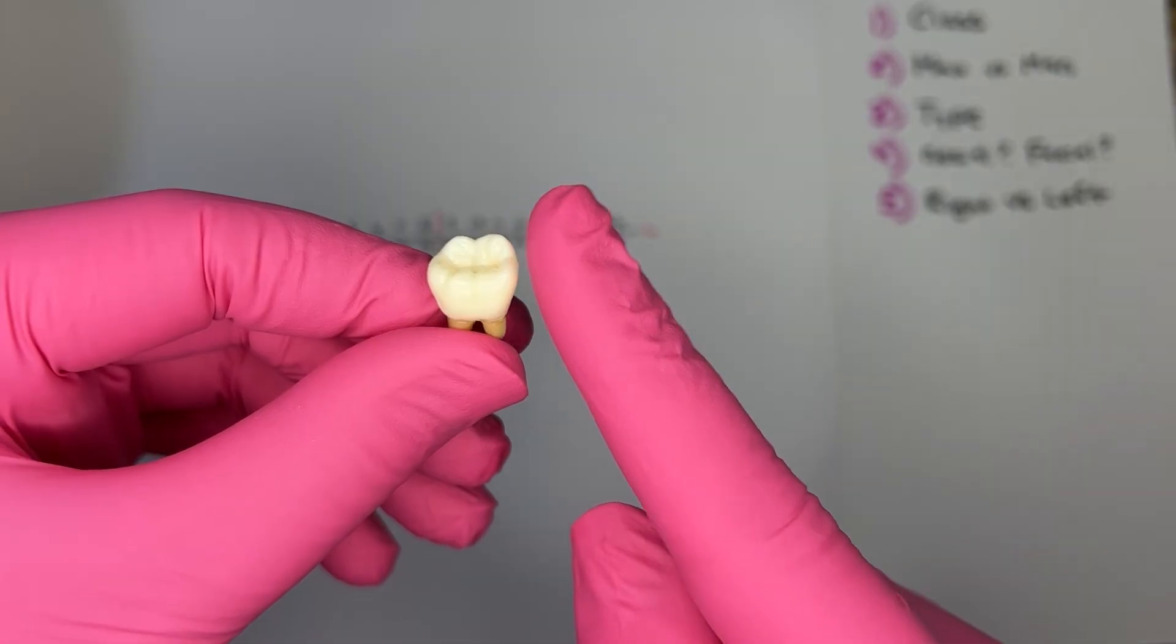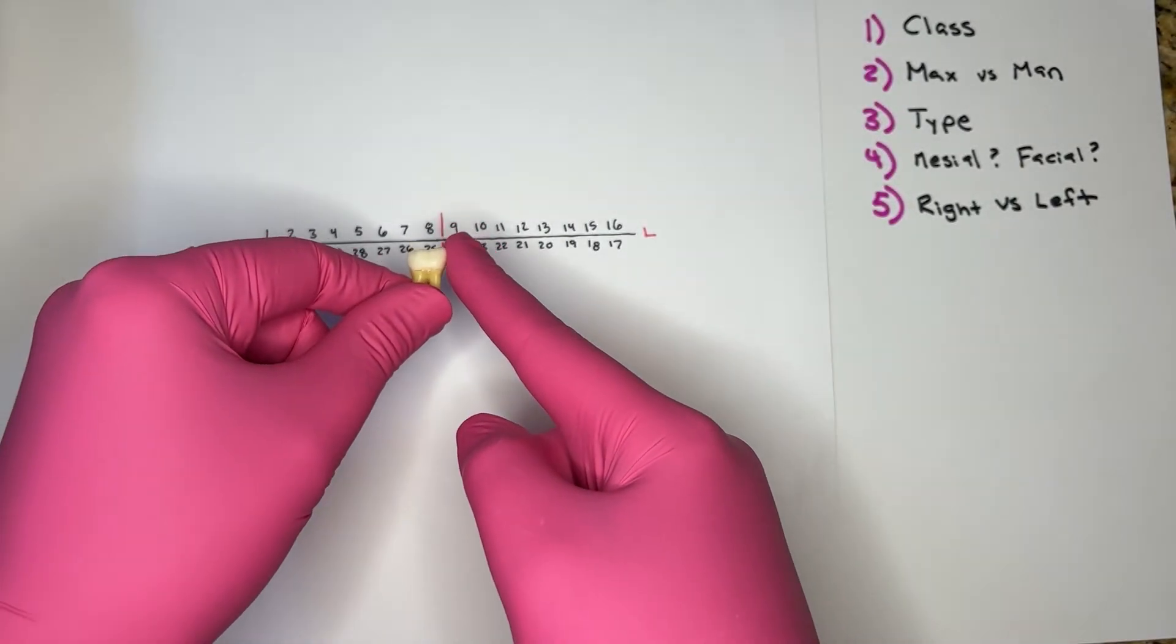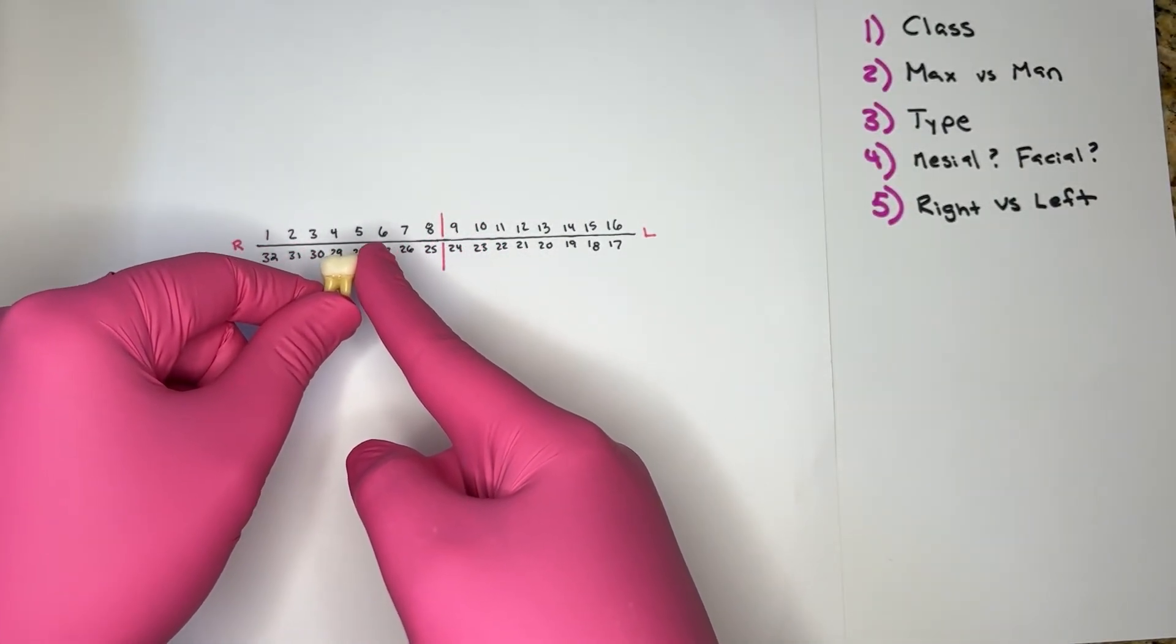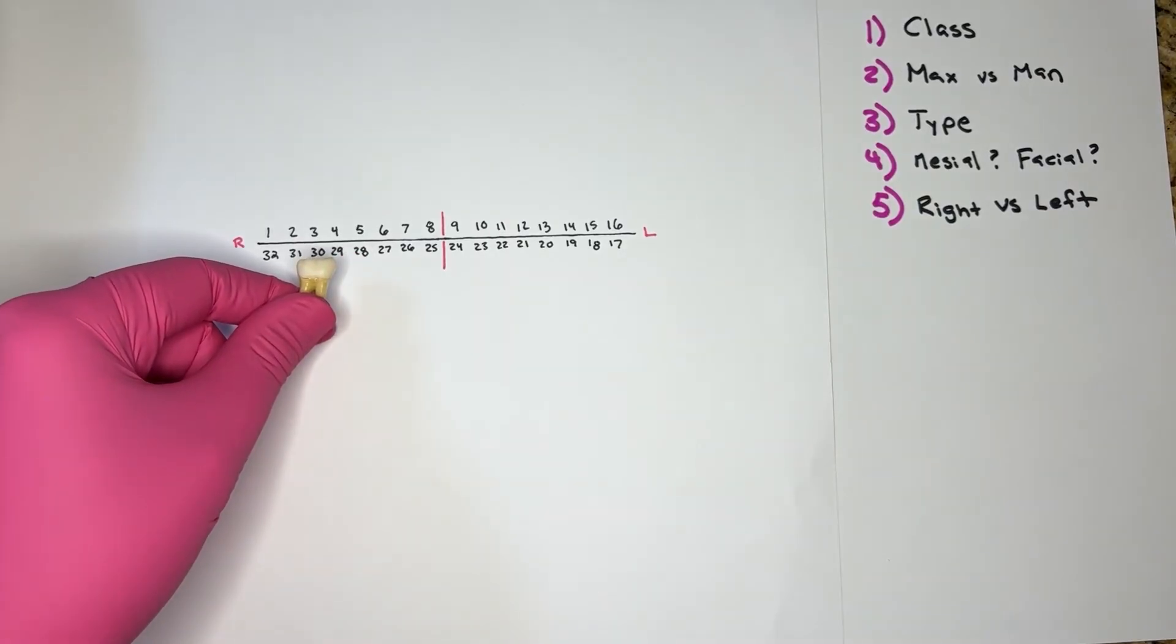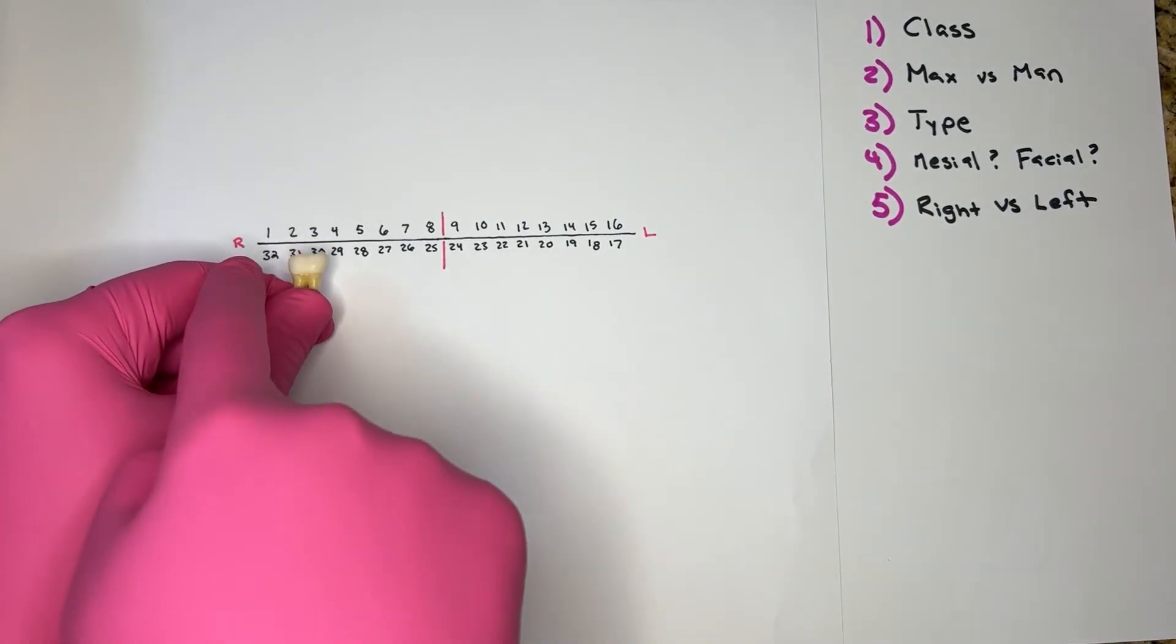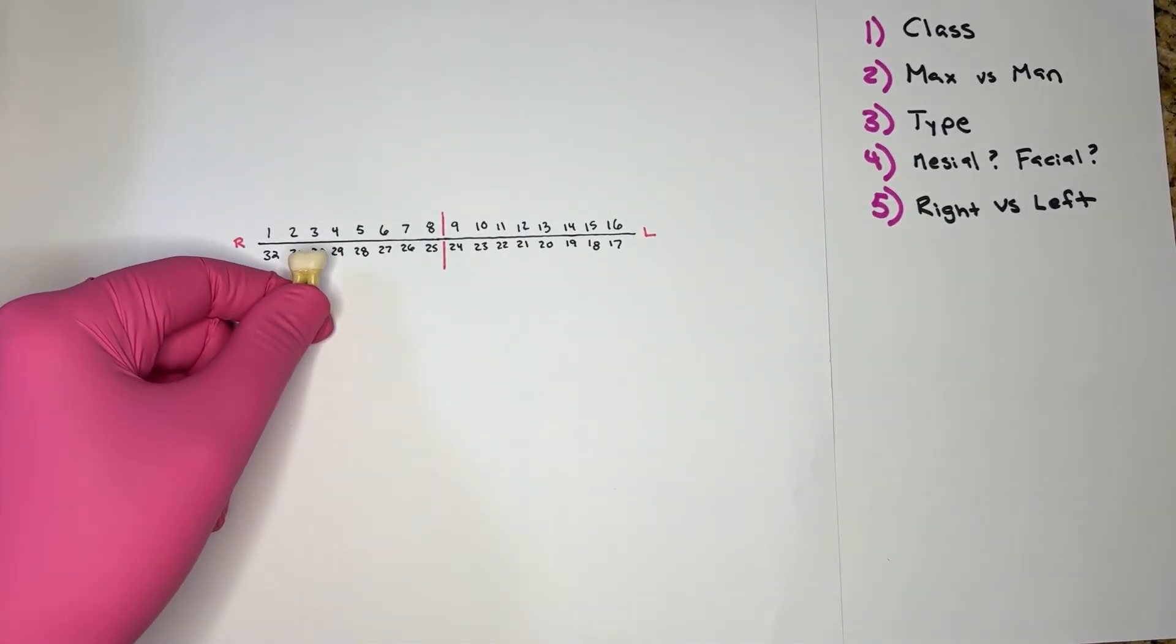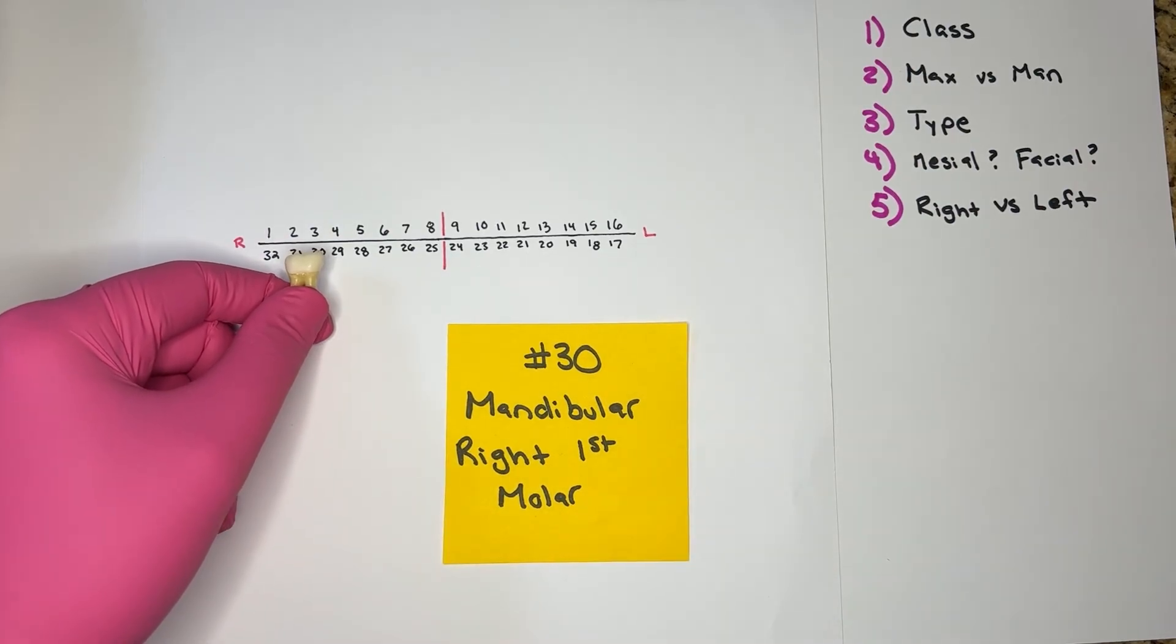Facial facing me, mesial held, take it to the midline, take it to the area of the mandibular first molars. I know that this tooth lands on the right side of the patient. This tooth is number 30, the mandibular right first molar.